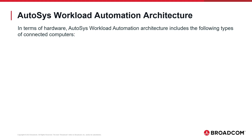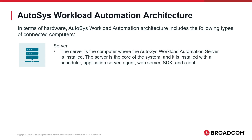In terms of hardware, the Autosys Workload Automation Architecture includes the following types of connected computers. The server is the computer where the Autosys Workload Automation Server is installed. It is the core of the system and is installed with a scheduler, application server, agent, web server, SDK, and client.